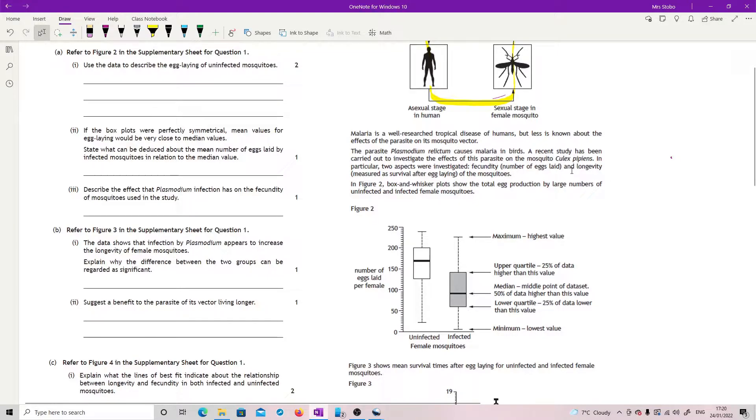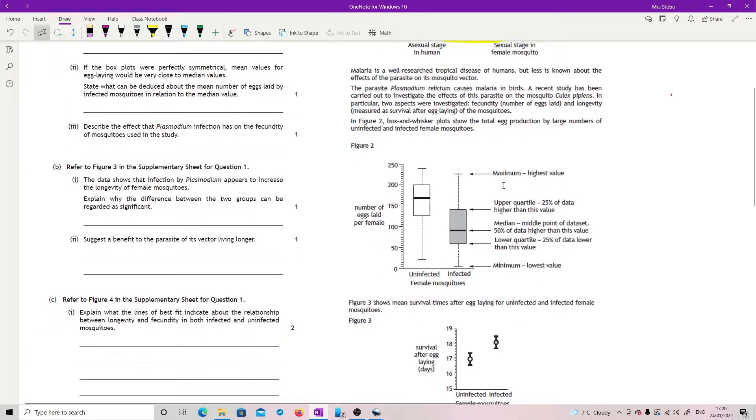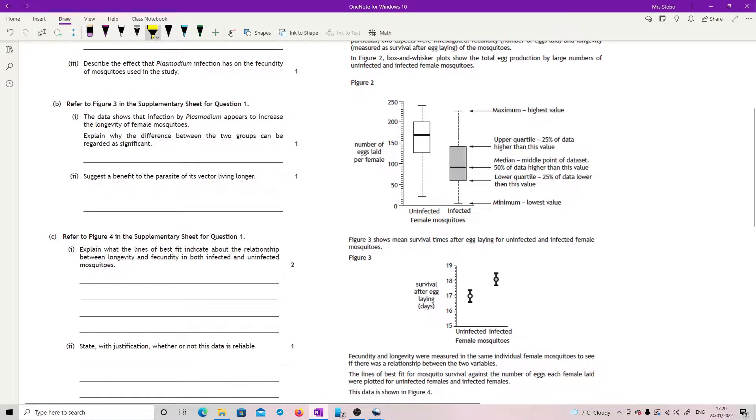A recent study has been carried out to investigate the effects of this parasite on the mosquito which is carrying it. In particular two aspects were investigated: fecundity which is number of eggs laid, and longevity measured as survival after egg laying. We've got a box and whisker plot showing total egg production by large numbers of uninfected and infected female mosquitoes.